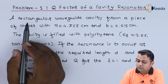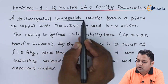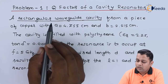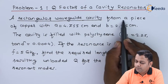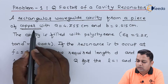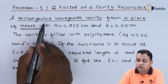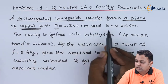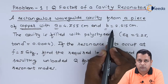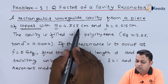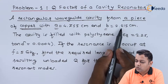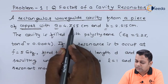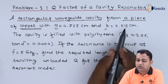In this problem statement, we have a rectangular waveguide converted to a rectangular cavity resonator, made from a piece of copper material. As far as the rectangular case is concerned, the cross-section has internal dimensions small a by small b. Small a is 4.755 centimeters and small b is 2.215 centimeters, representing the width and breadth of the rectangular cross-section.